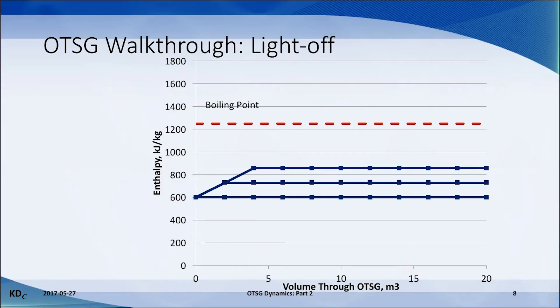We see on the graph to the left that the outlet enthalpy is rising continuously over time. This is the constant rise in temperature that is seen at the outlet of the OTSG during light off.